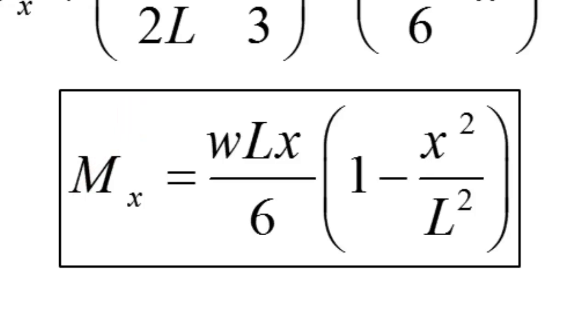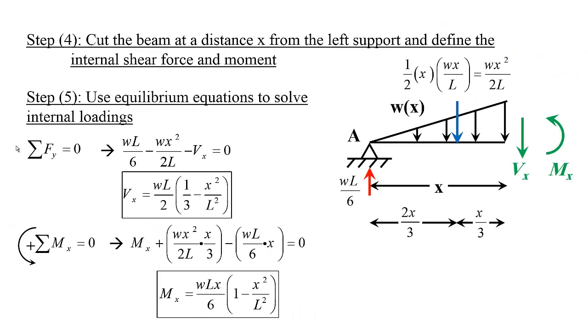What about at distance X equals L, which is at support B? Looking inside the parentheses, we have 1 minus X squared over L squared. If I substitute L instead of X in this expression, I'll have 1 minus L squared over L squared, that's 1. So 1 minus 1 is zero, multiplied by the whole thing is zero. Now we can sense that this moment makes sense.